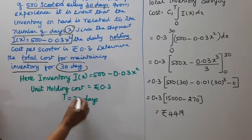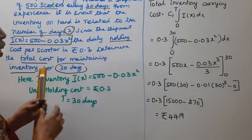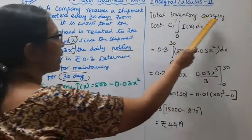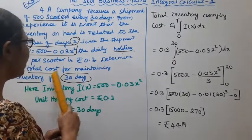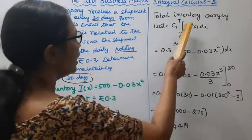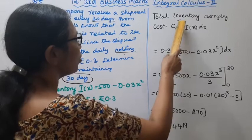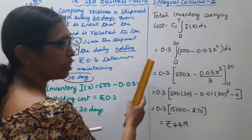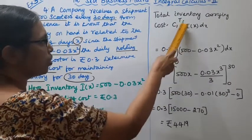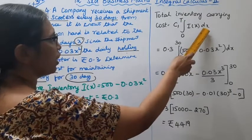Total inventory carrying cost equals C₁ times the integral from 0 to T of I(x)dx. So C₁ integral from 0 to T of I(x)dx, where C₁ is 0.3.